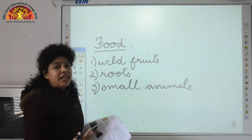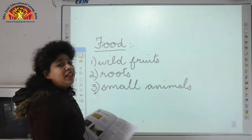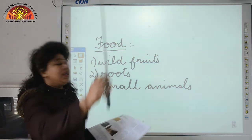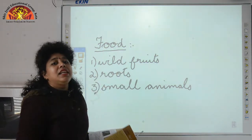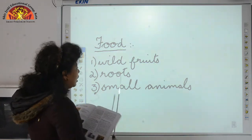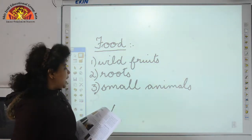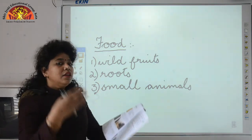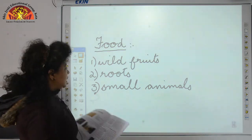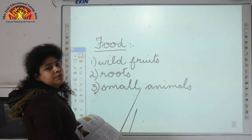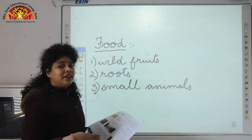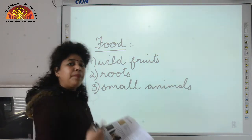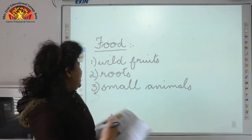Slowly, with time, they realized that they could use long wooden sticks to pluck wild fruits that were at a height. They realized they could use sharp stones to dig out roots of trees and plants. They also started using sharp stones and wooden sticks to kill small animals. That's when they started realizing the use of tools in their daily lives.